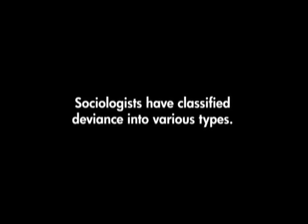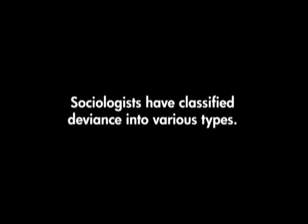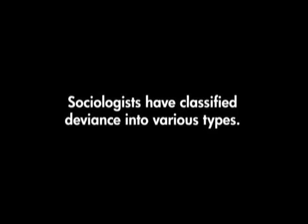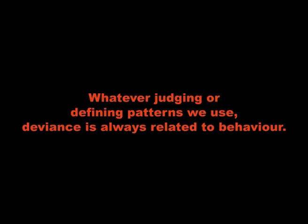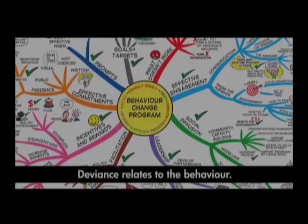There are three types of deviances. Many sociologists have classified deviance into various types. Whatever the defining pattern that is used, deviance is always related to behaviour. The first type is cultural and psychological deviation — in cultural deviation, an individual deviates from the norms followed by that culture. An example is genocide.